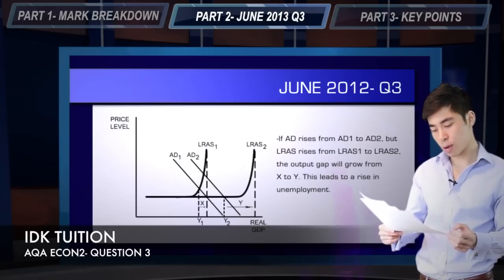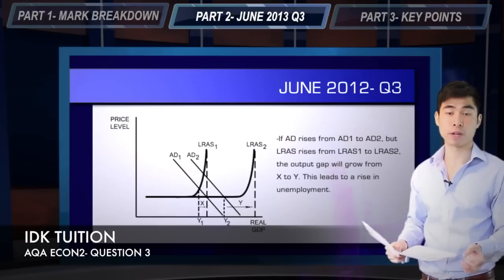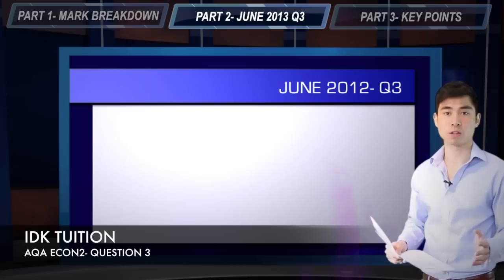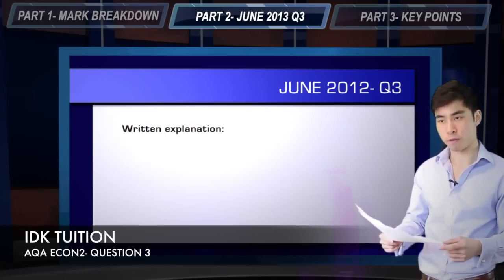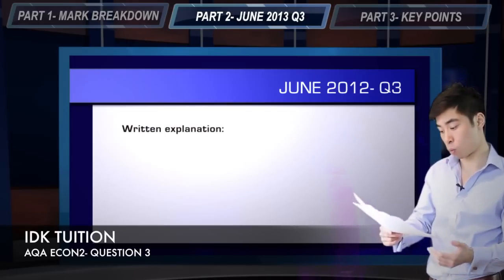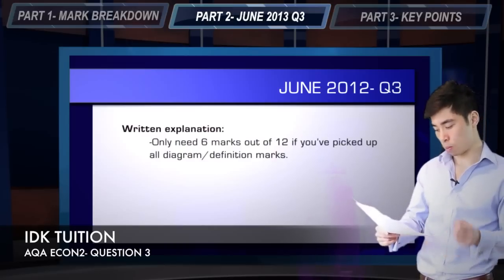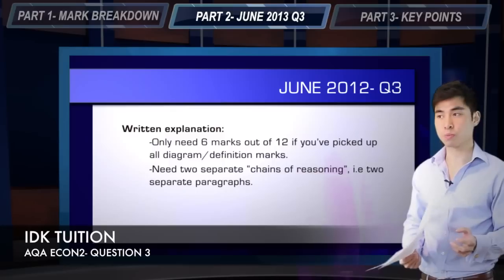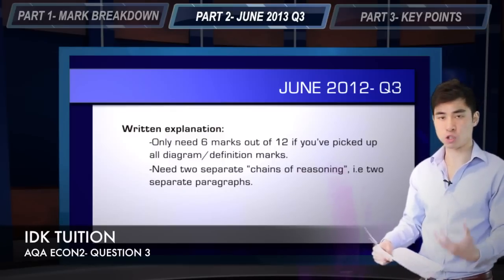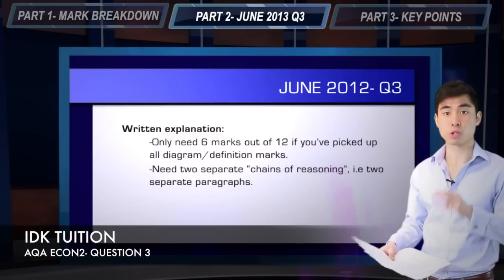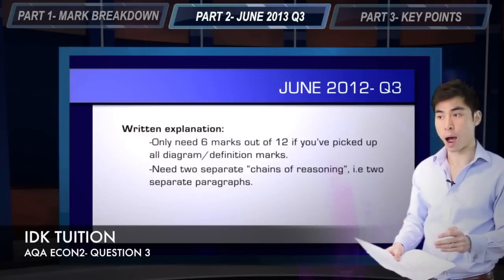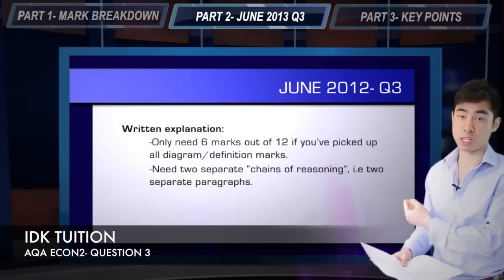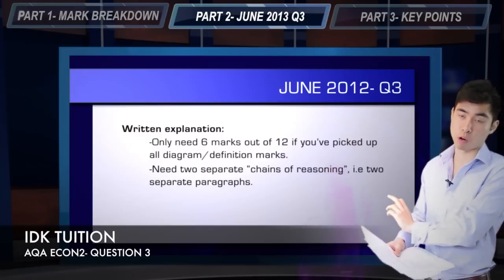So say we've picked up two marks for our definitions and four marks for our diagram — we only need a further six marks out of twelve from our written explanation. For your written explanation, you want to approach this by answering the question from two angles — two separate chains of reasoning. The best way to think about this is writing two separate paragraphs.